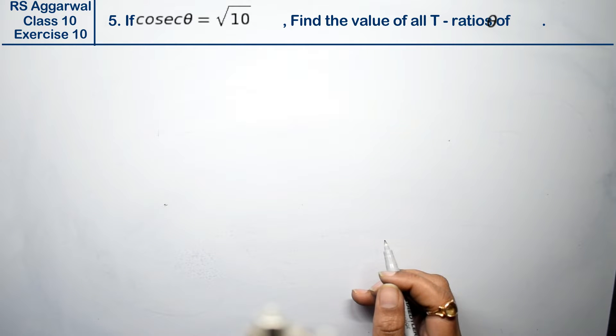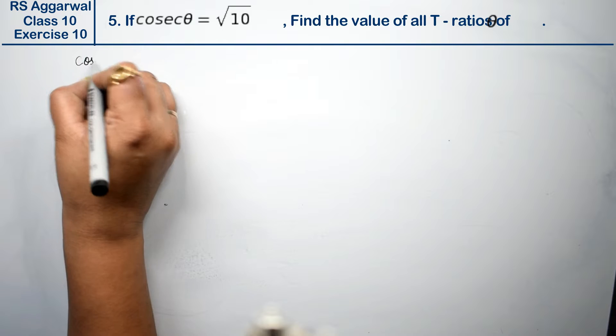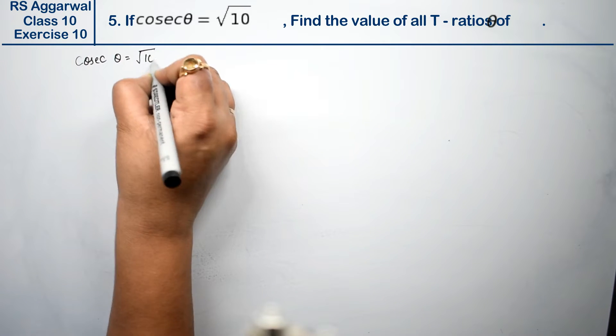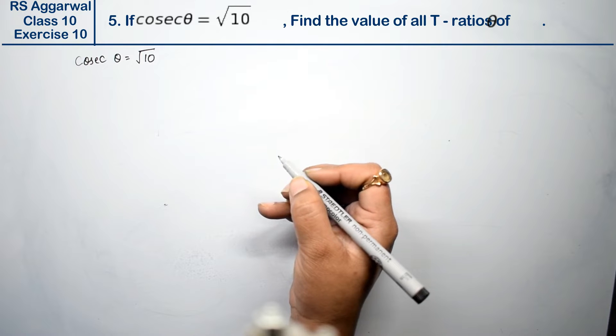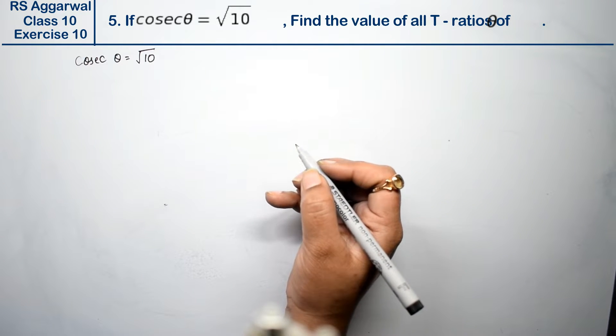Let's do question number 5 of exercise 10, that is trigonometric ratios. Question number 5 is if cosec theta is root 10. We have the value of cosec theta, root 10. We are asked to find the value of all T-ratios of theta.